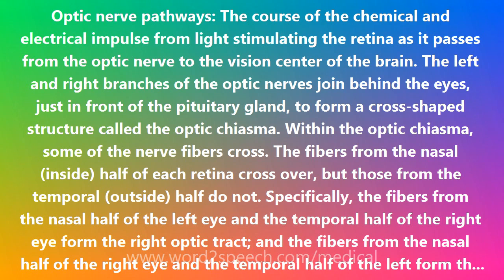The left and right branches of the optic nerves join behind the eyes, just in front of the pituitary gland, to form a cross-shaped structure called the optic chiasma. Within the optic chiasma, some of the nerve fibers cross. The fibers from the nasal inside half of each retina cross over, but those from the temporal outside half do not.